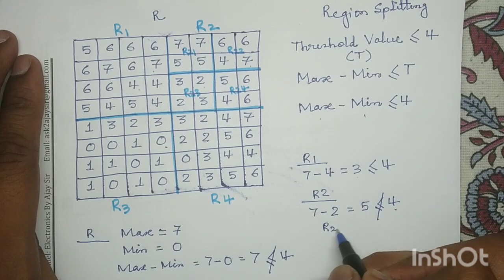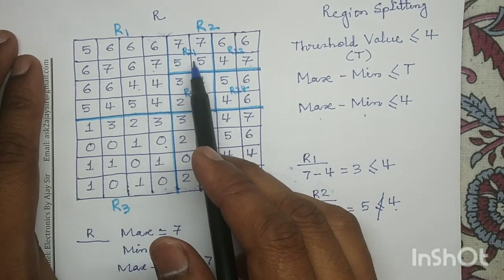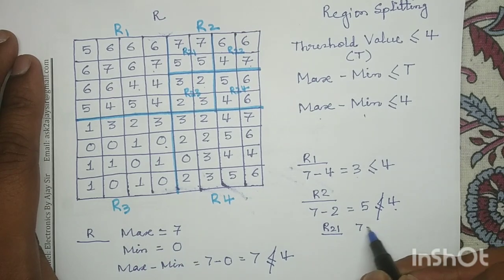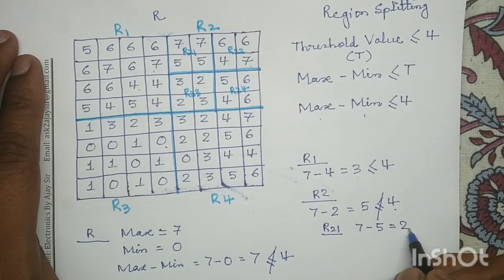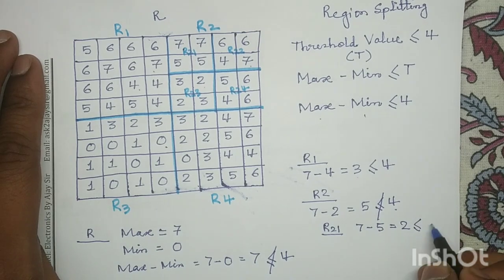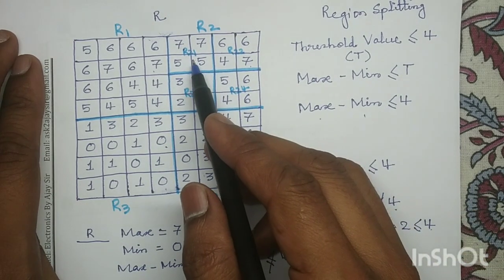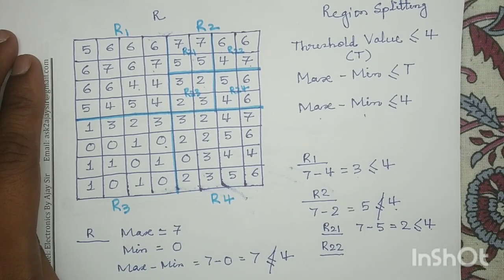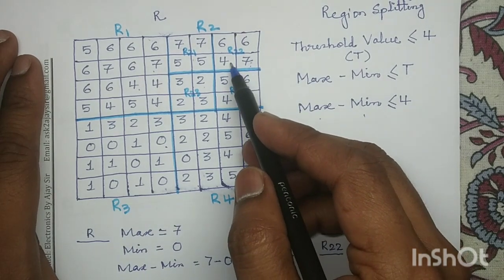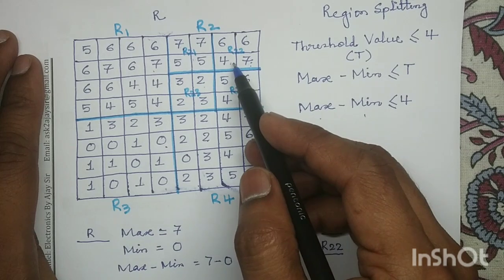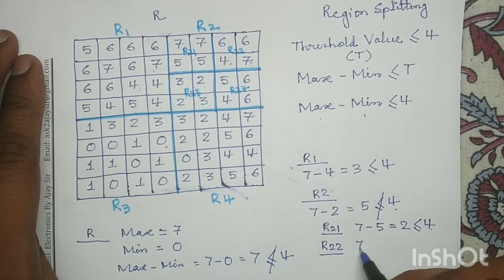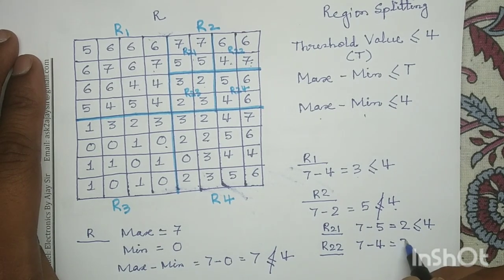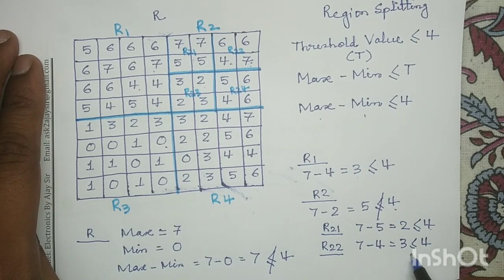For R21: maximum is 7, minimum is 5. 7 minus 5 equals 2, which satisfies the homogeneity condition (2 ≤ 4). We will not split R21. For R22: maximum is 7, minimum is 4. 7 minus 4 equals 3, which is less than or equal to 4. R22 satisfies the homogeneity condition, so we will not split R22 further.